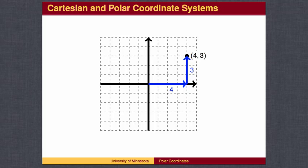Mathematically, we call this the Cartesian coordinate system. The x-axis measures the distance left and right, and the y-axis measures the distance up and down.